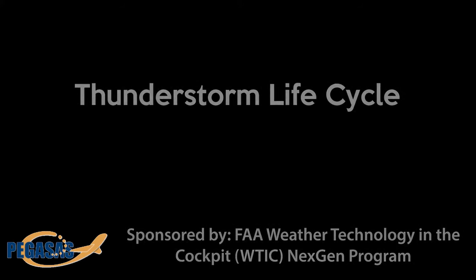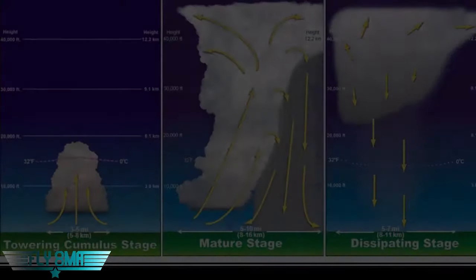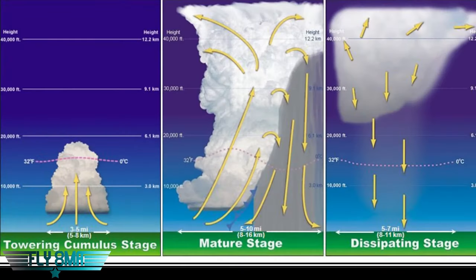Any thunderstorm can be broken up into three distinct stages. From an academic standpoint, this is very clear and simple to understand. From a realistic standpoint, a large storm can easily be going through multiple stages at the same time, or different parts of it can be experiencing different stages at the same time. We'll look at an example of that here in just a moment.